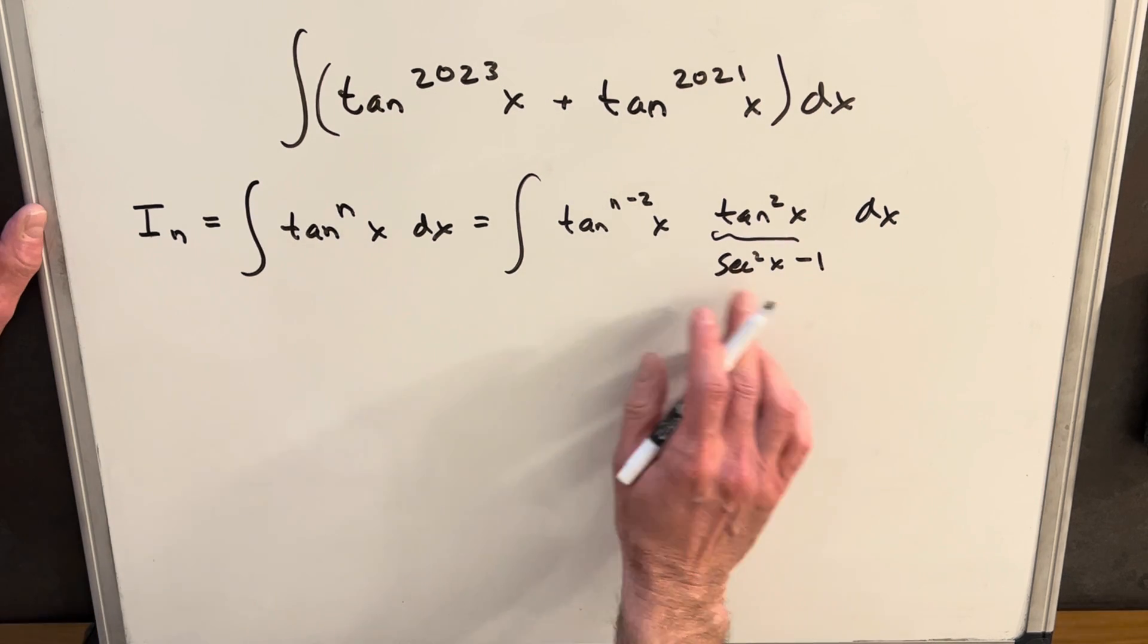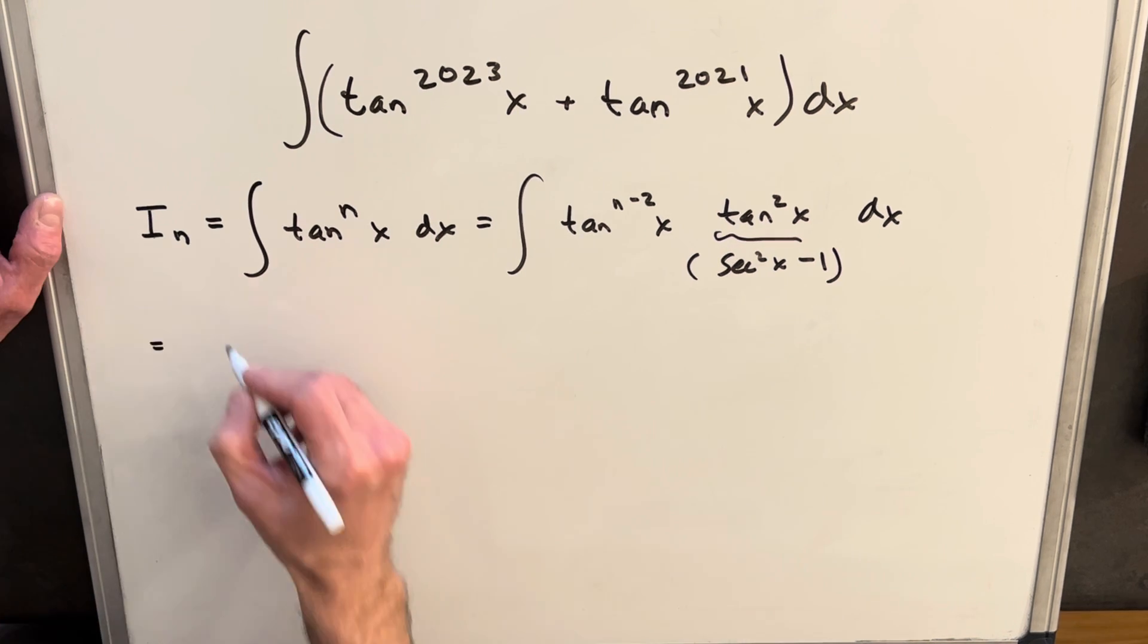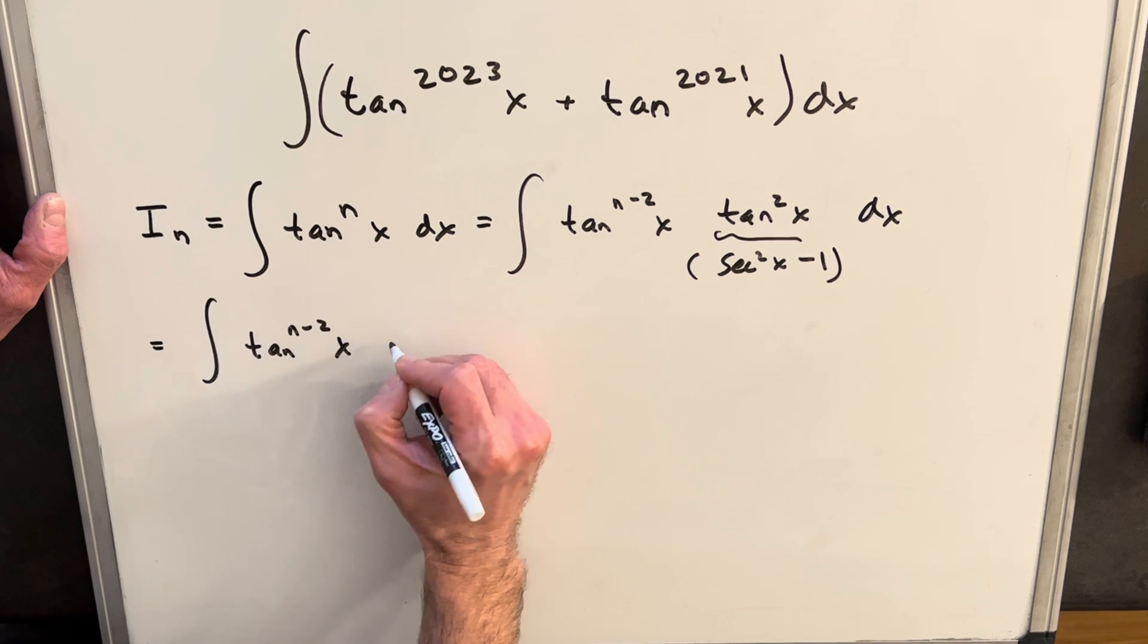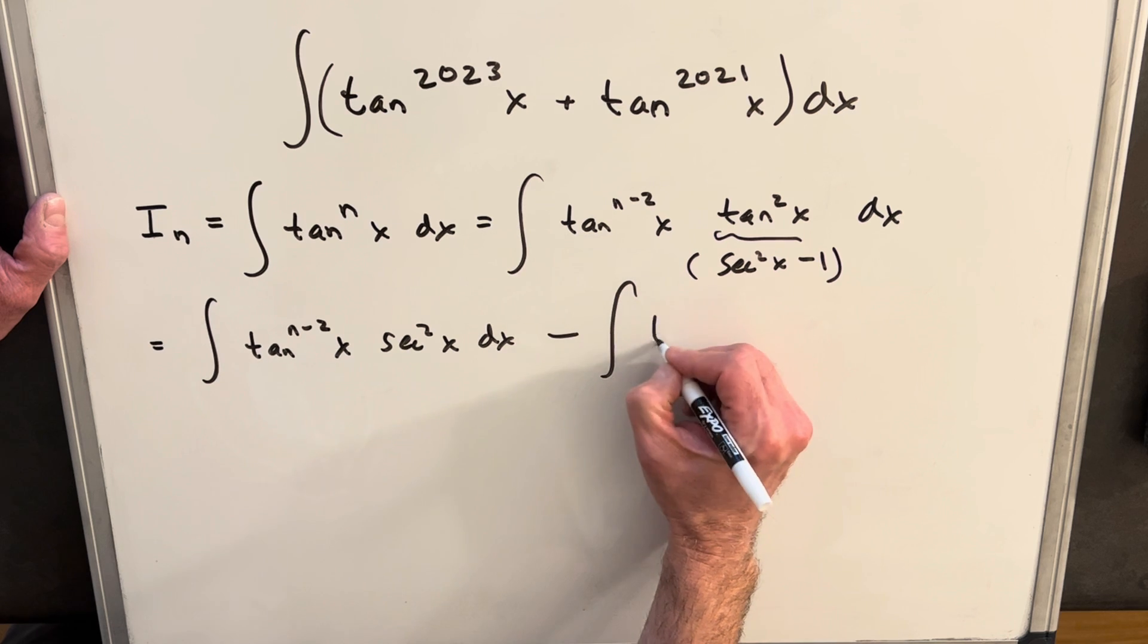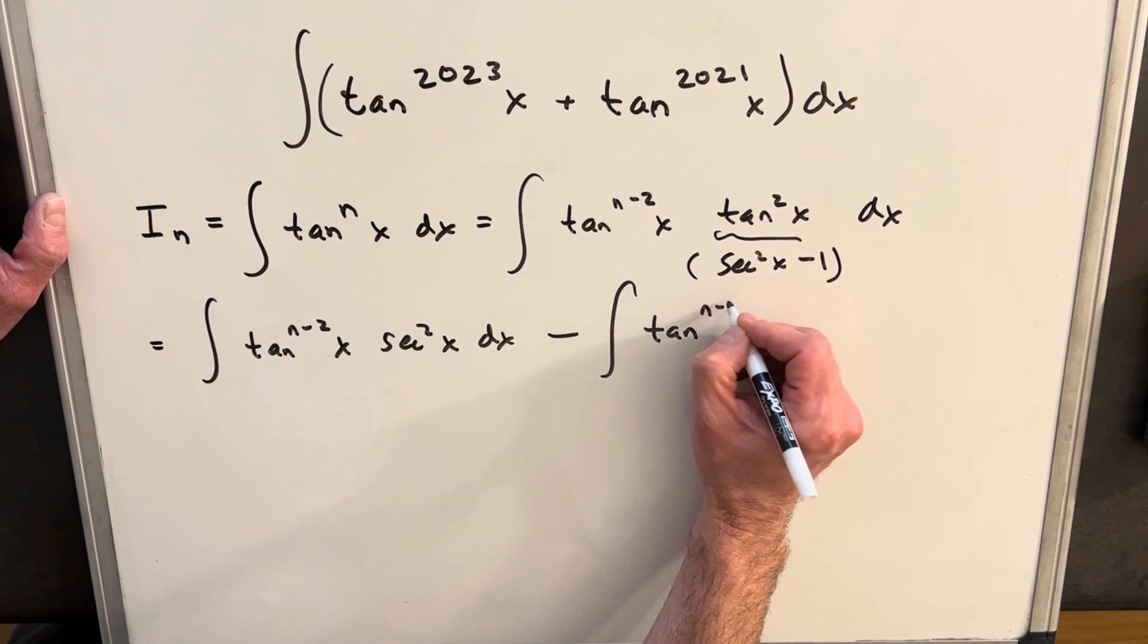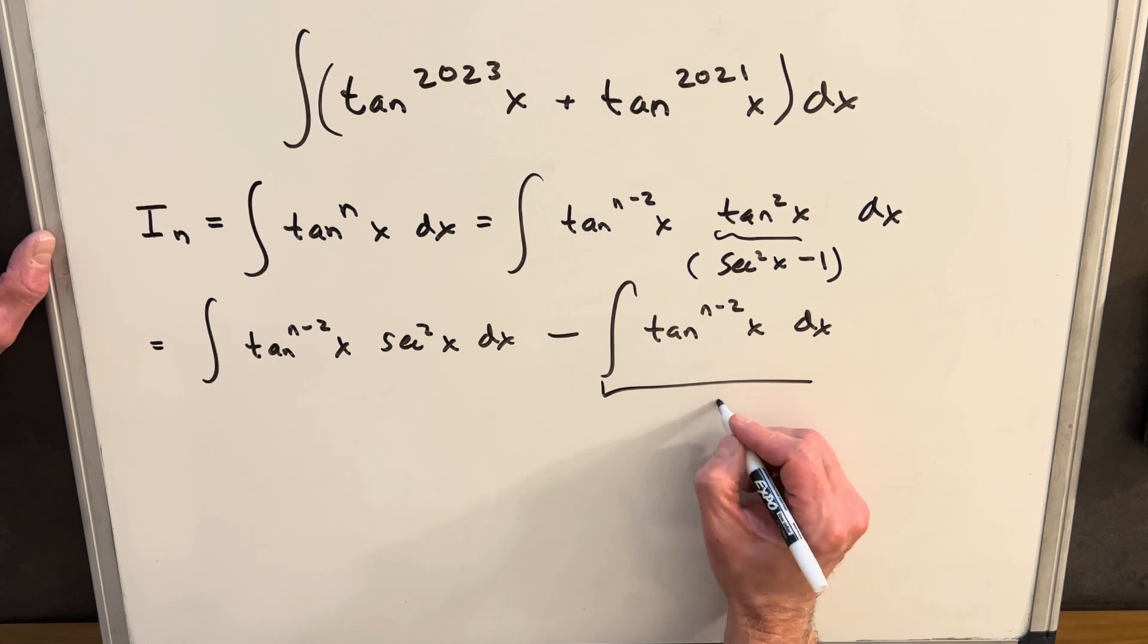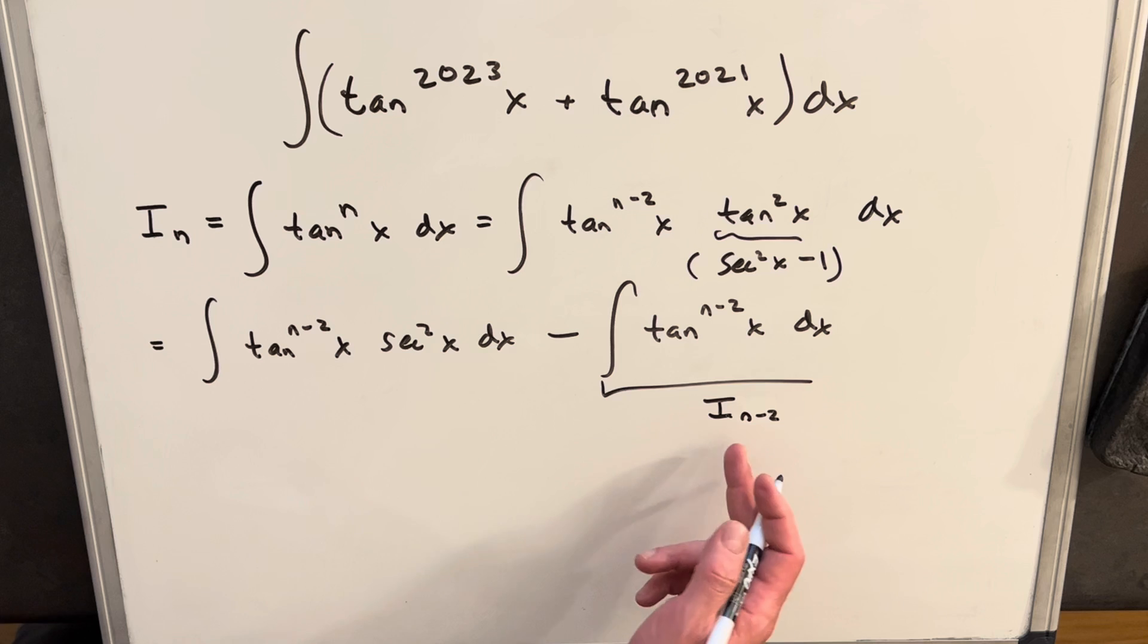So when I rewrite this, we'll just distribute our tan n minus 2 into this. So we'll have tan n minus 2x secant squared x dx, and we'll just have a minus integral of tan n minus 2x dx. We could just call this i sub n minus 2. This resembles the original integral, just 2 degrees lower.